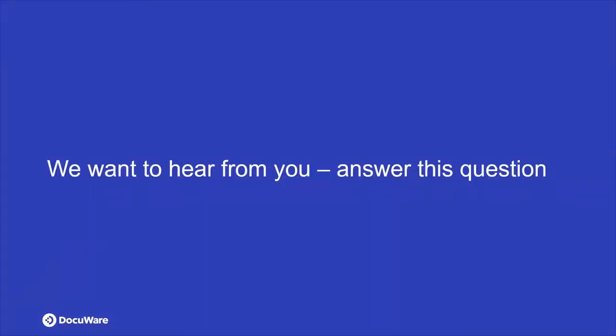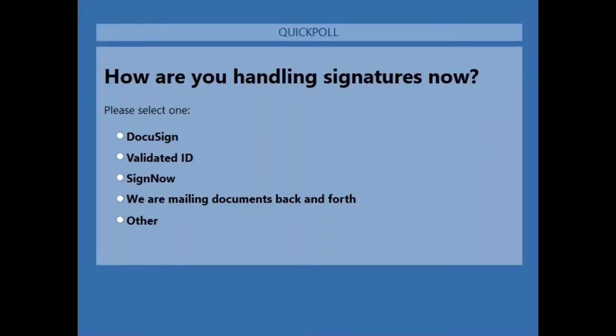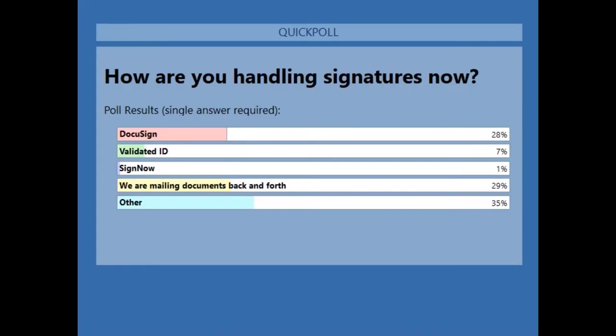We want to hear from you, so we're going to start off with a brief survey — a quick question that we want to get some answers to. I'm loading the poll now. You'll see it pop up on your screen. Let's take a second to select one of the choices, and once we have a good amount of votes I will close the poll and share the results. It looks like you guys are voting — great, thank you. We got a good amount, so I'm going to close the poll now and share the results.